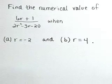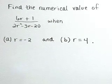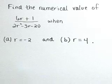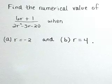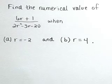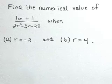Find the numerical value of 6r plus 1 over 2r squared minus 3r minus 20 when, in part a, r is equal to negative 2, and in part b, when r is equal to 4.